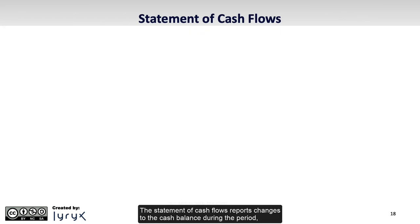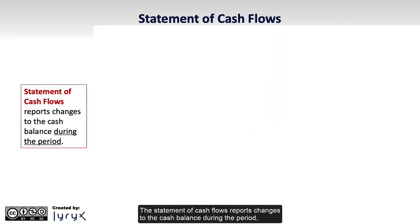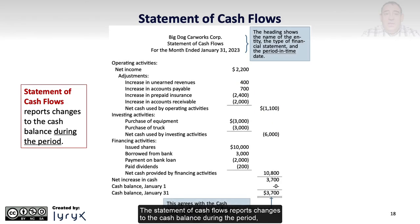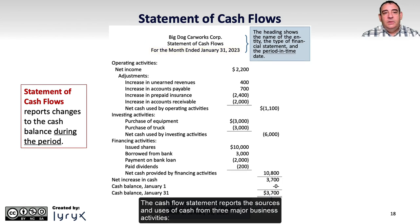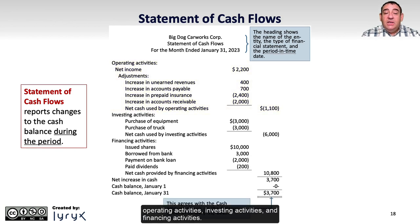The statement of cash flows reports changes to the cash balance during the period, and notice how its title shows the same time period as the income statement and the statement of changes in equity. The cash flow statement reports the sources and uses of cash from three major business activities: operating activities, investing activities, and financing activities.